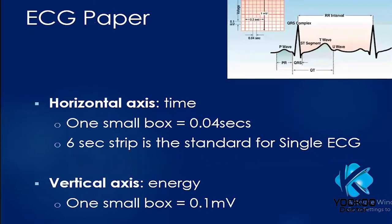On ECG paper you see small squares and larger squares. On the horizontal axis you see time — one small box is 0.04 seconds or 40 milliseconds. Usually we take a six-second strip for standard ECG. You have limb leads, precordial leads, and a rhythm strip; that rhythm strip is mainly six seconds. On the vertical axis it is voltage — one small box corresponds to 0.1 millivolt.